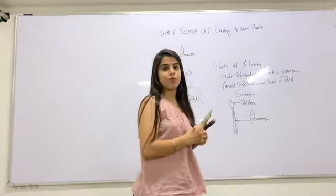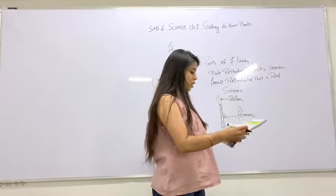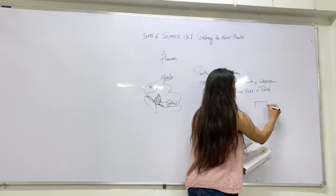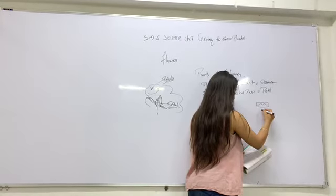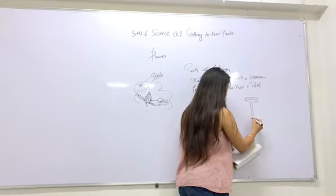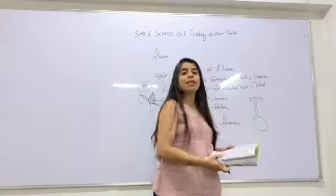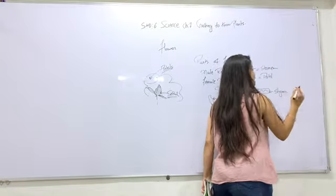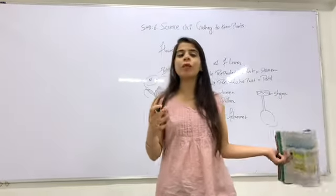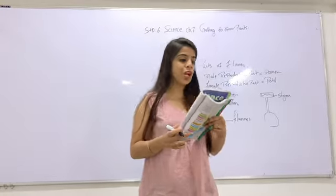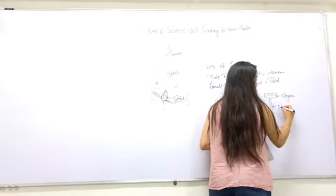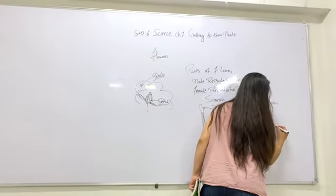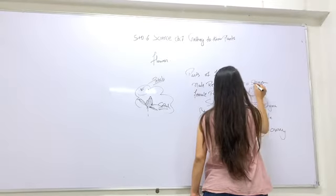Now let's look at the female reproductive part. The pistil is the female reproductive part. It has a sticky top part called the stigma, a tube-like style, and a swollen lower part called the ovary.